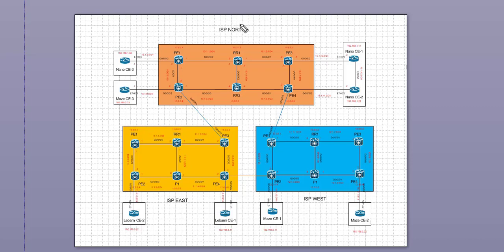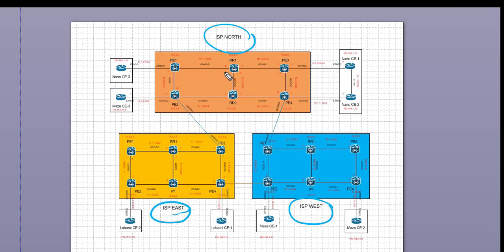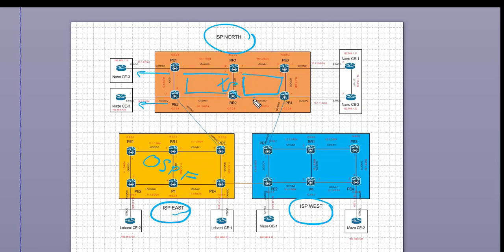Welcome back to the IOS XR series. Today we're going to do a recap through our larger topologies. We have ISP East and ISP West at the bottom, and ISP North at the top. Since we started the series, we've been working through ISP North first — we built our IGPs, and now today we're going to build MPLS LDP in ISP North to get it ready for further MPLS applications. For IGPs, we're going to run OSPF in ISP East, IS-IS in ISP North, and IS-IS in ISP West.